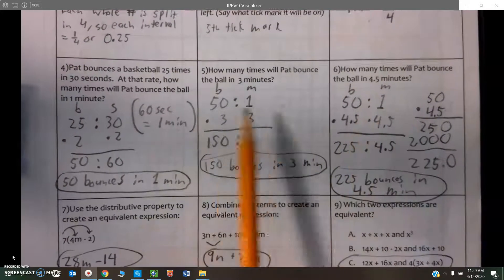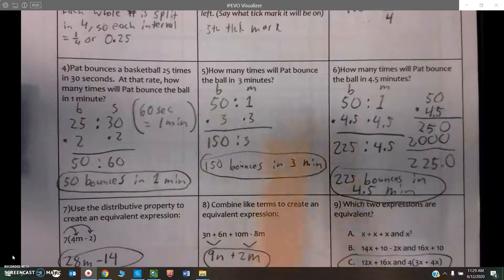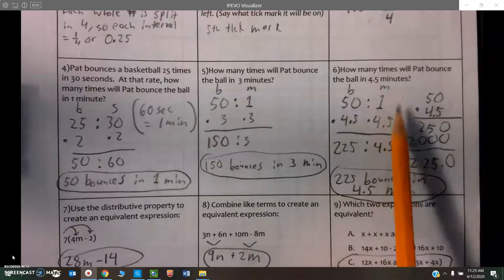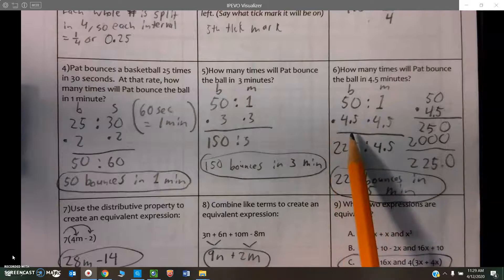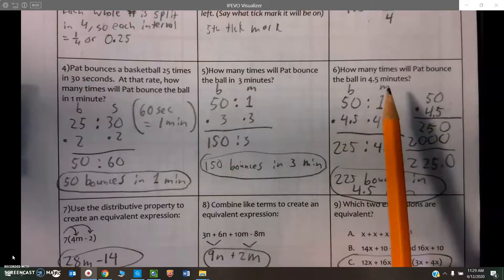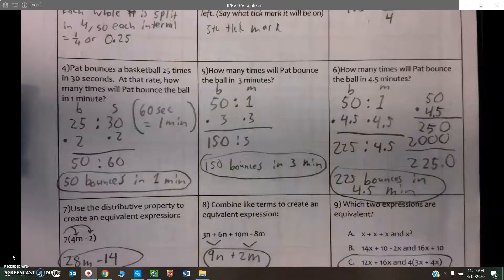And then here, I'm going to use this same ratio, or this unit rate rather, because it's a ratio per one. And I'm going to multiply both sides by 4.5, for 4.5 minutes.